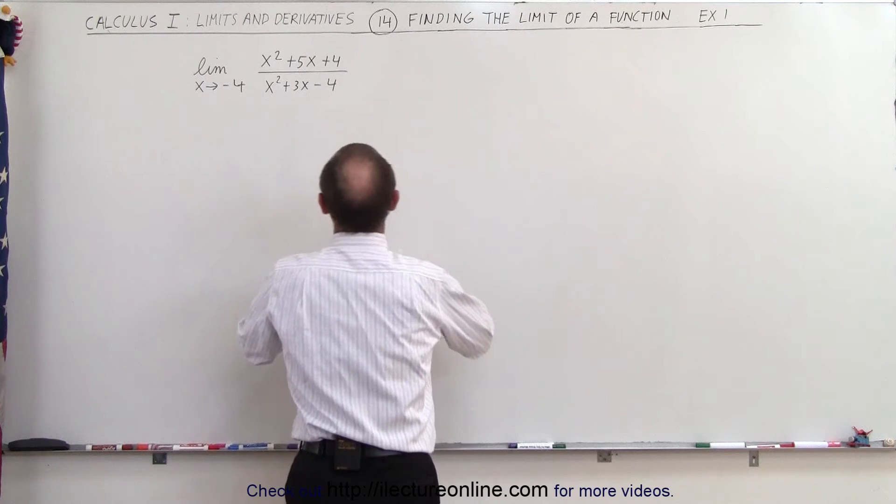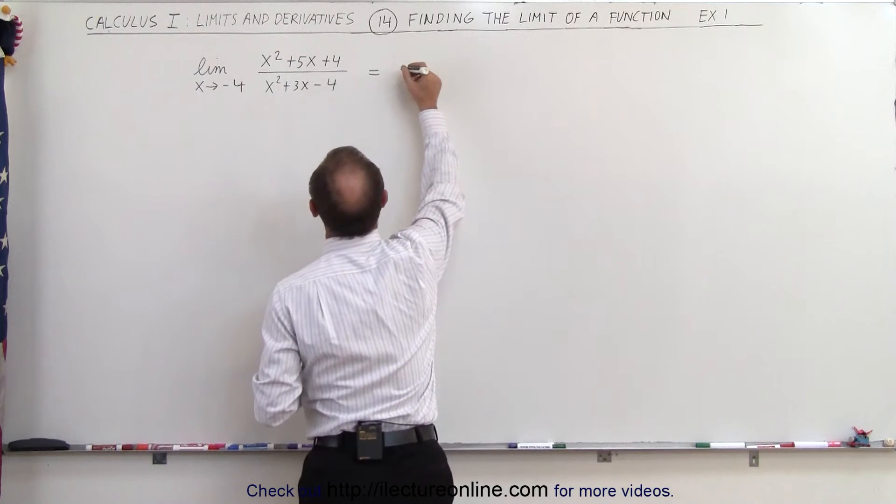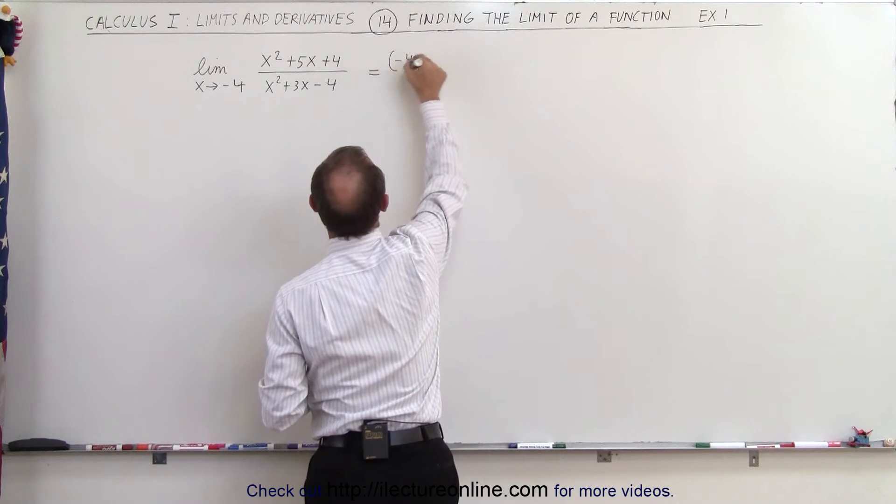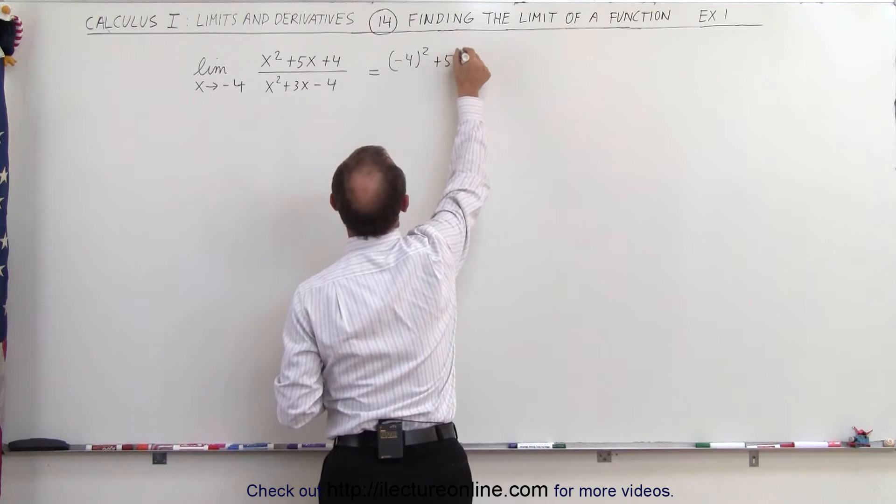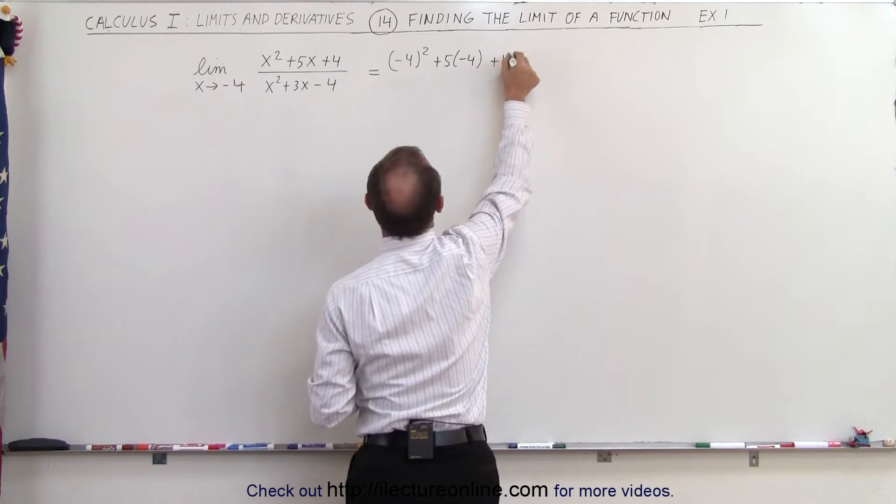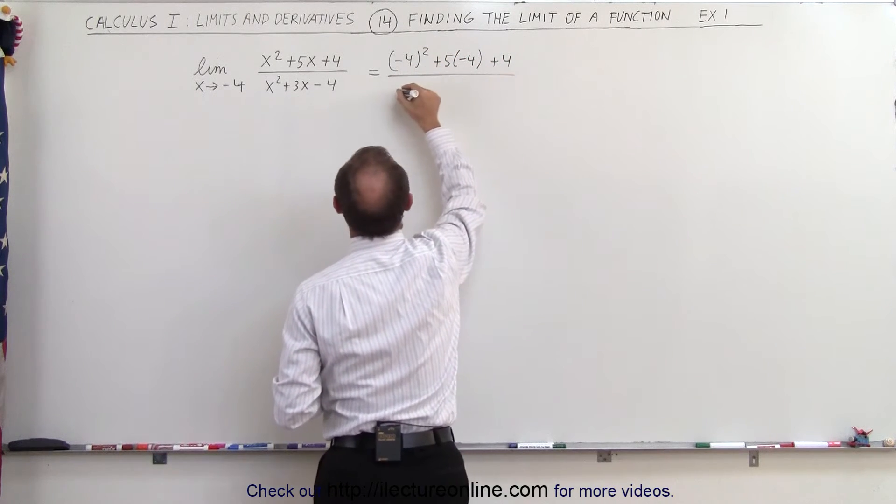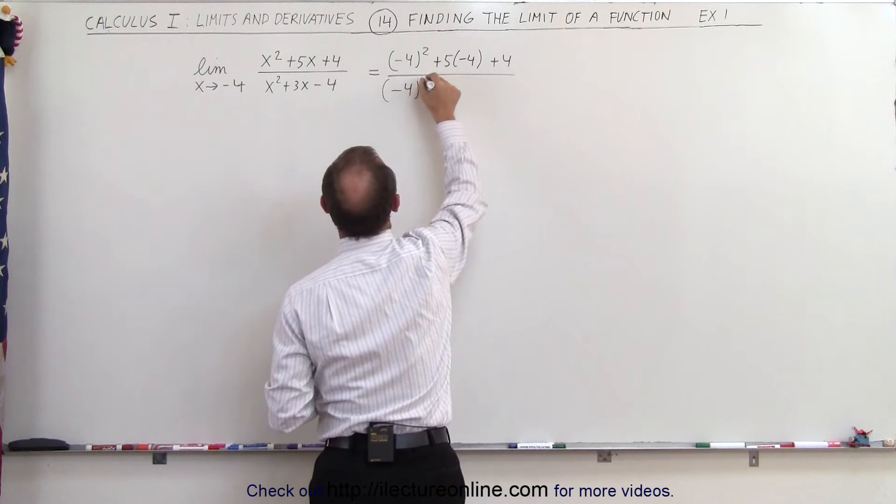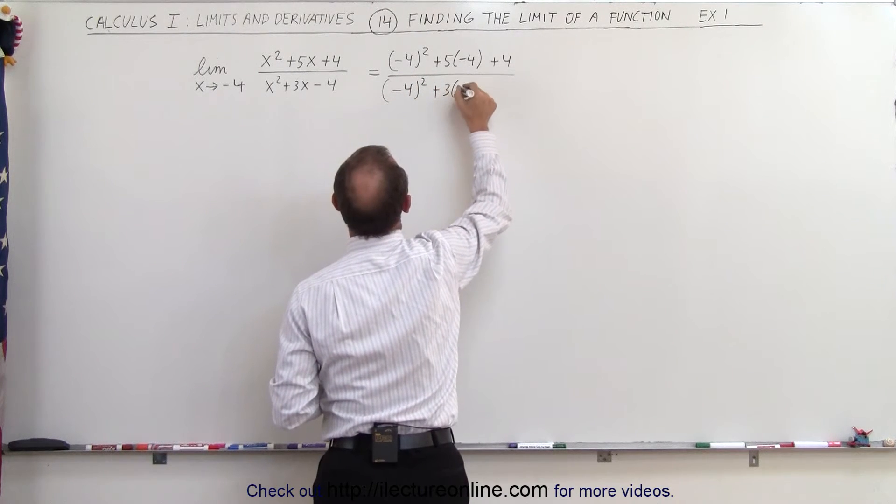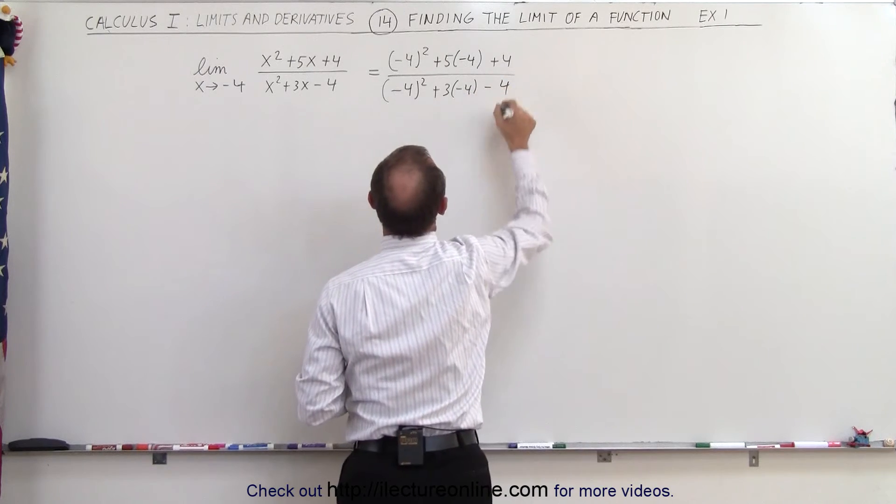Let's plug in -4 and see what we get. This is equal to (-4)² + 5(-4) + 4 divided by (-4)² + 3(-4) - 4.